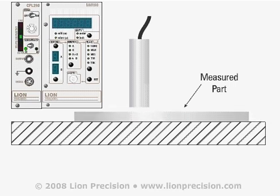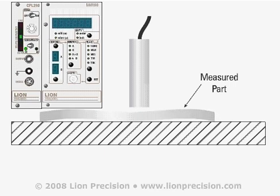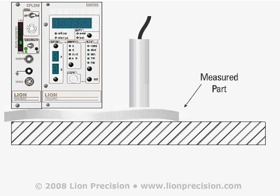The single-channel method assumes the part is perfectly flat against the reference surface. Any deformity of the part or the reference surface will cause portions of the top surface of the part to be higher, which will be incorrectly interpreted as greater thickness. Any foreign matter between the part and the reference surface will also create an error.